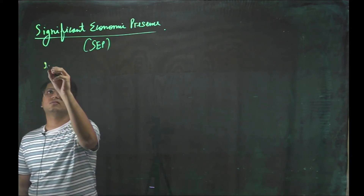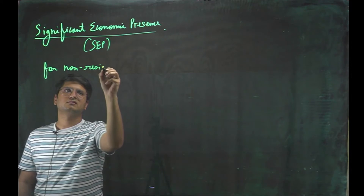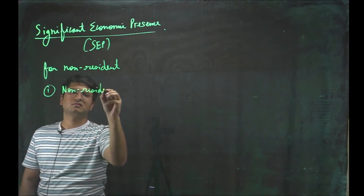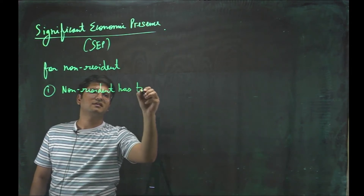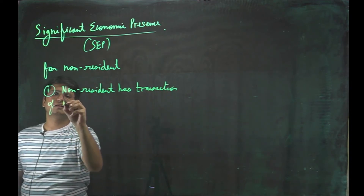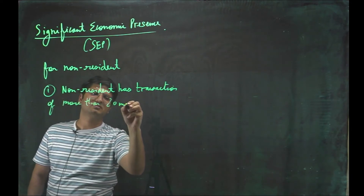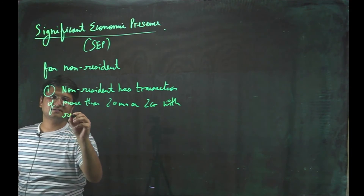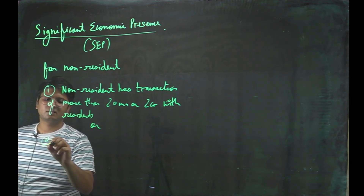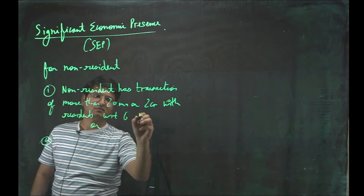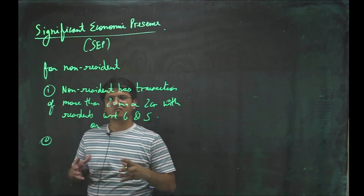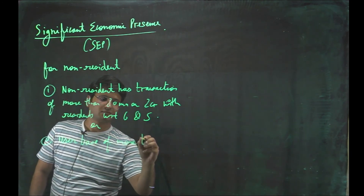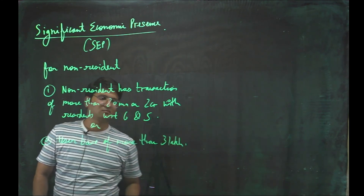How do we calculate this? It is for non-residents, and there are two criteria. First, the non-resident has transactions of more than 20 million, or 2 crore — both are the same amount — with residents, with respect to goods and services. Or, second, the non-resident has a user base of more than 3 lakh. So this terminology is used in taxation.